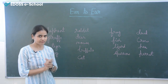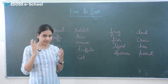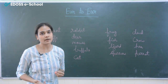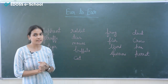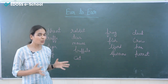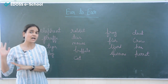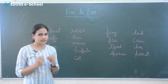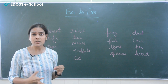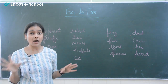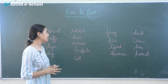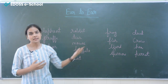Ears of different animals are different, and the ear is a sense organ among all the five sense organs. To conclude: the animals whose ears are visible from the outside give birth to their young ones, and the animals whose ears are not visible from the outside lay eggs. This is all about the chapter 'Ear to Ear.' Thank you.